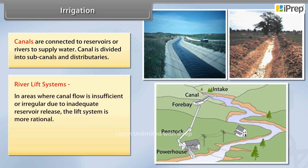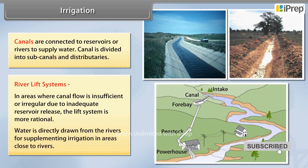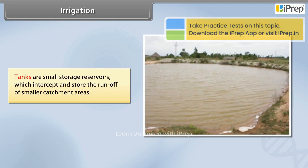River lift systems are used in areas where canal flow is insufficient or irregular due to inadequate reservoir release. The lift system is more rational, and water is directly drawn from rivers for supplementing irrigation in areas close to rivers.